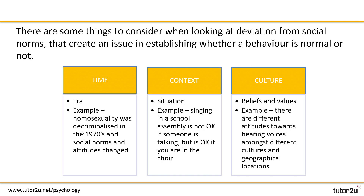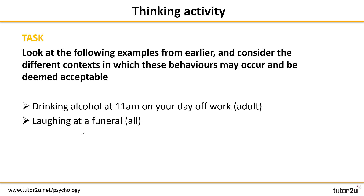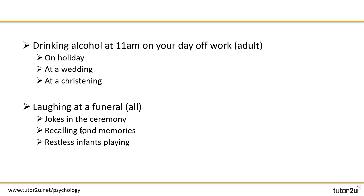So all in all, we've got three key things to consider when looking at whether deviation from social norms is a good definition of abnormality or not. For our first task, look at the examples we had in an earlier video activity and think about the context or situations where these behaviors might actually be deemed acceptable. Pause the video for two minutes while you come up with some suggestions.